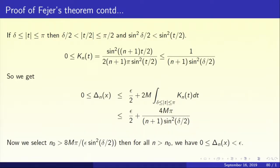So we have proved that delta_nx goes to 0 uniformly as n goes to infinity. The n0 depends on epsilon and delta, but delta is independent of x, and therefore the convergence is uniform. That completes the proof of Fejér's theorem.